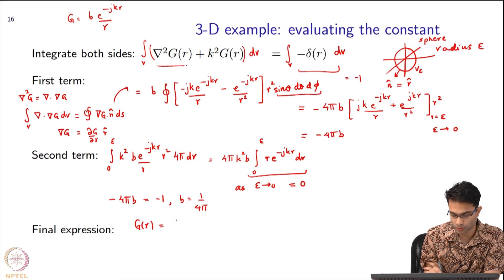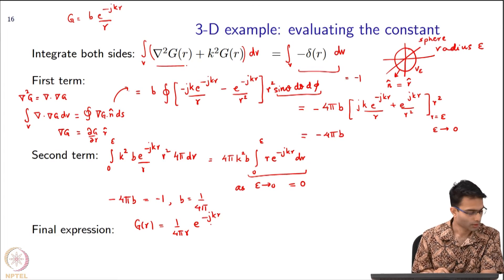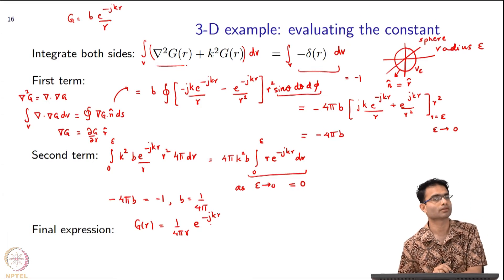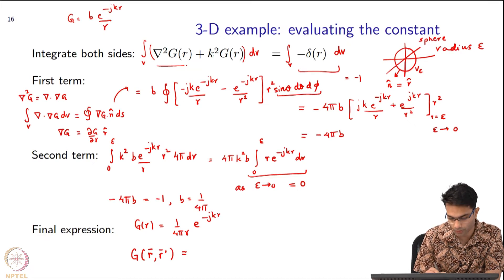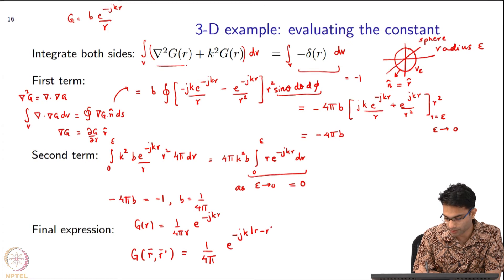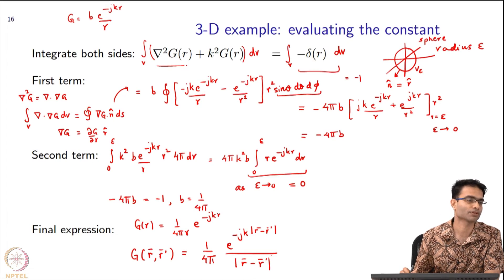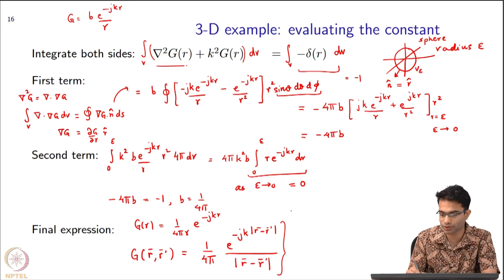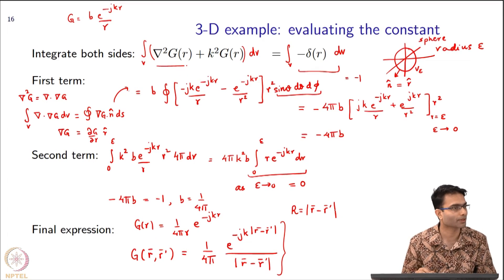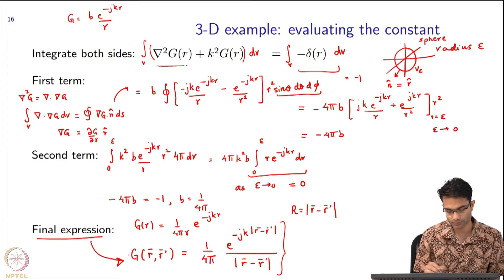So g(r) = e^(−jkr) / (4πr). This was for the impulse placed at the origin. For the general case, g(r, r') = e^(−jk|r−r'|) / (4π|r−r'|). Many books use the shorthand that capital R is defined as r − r', so you will find the expression written as e^(−jkR) / (4πR) in many places. That is the final expression.